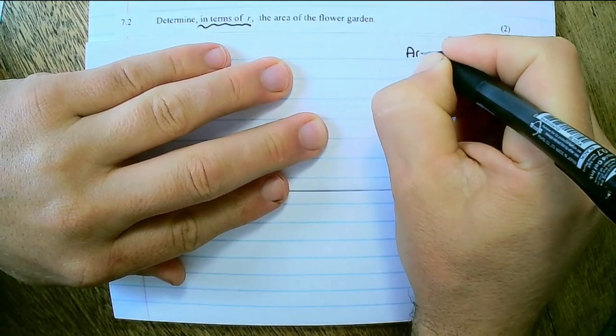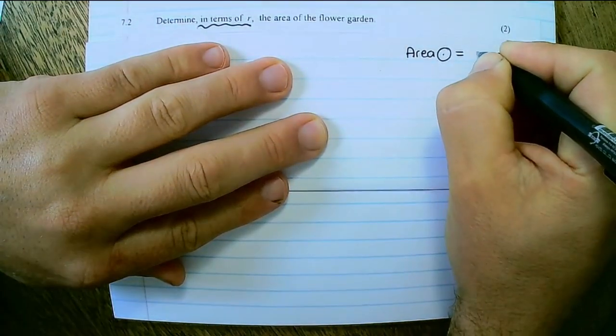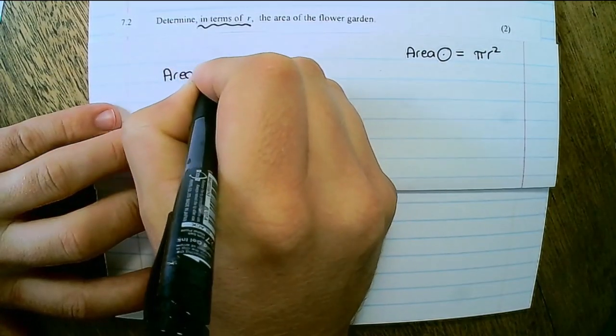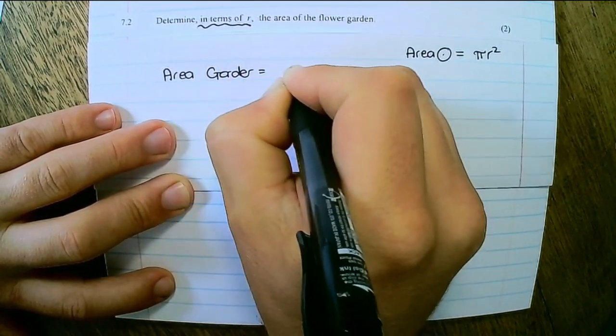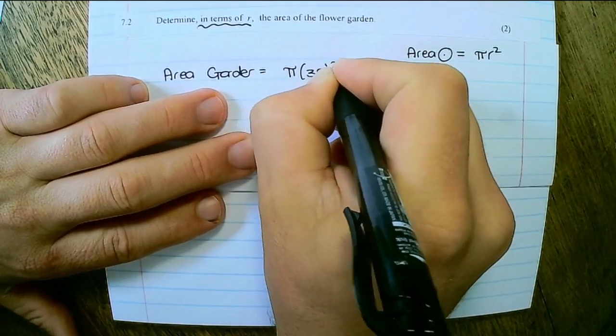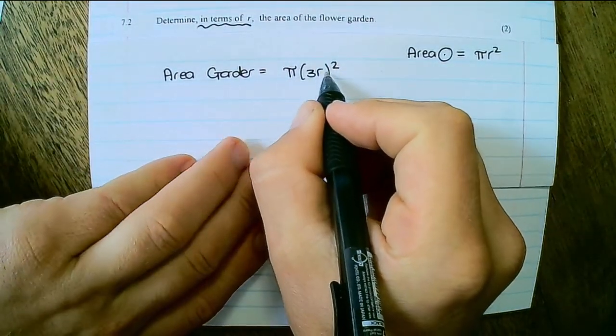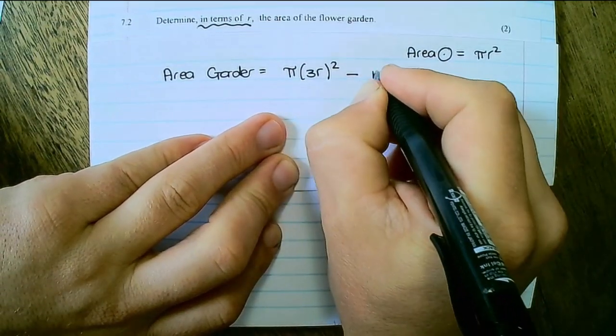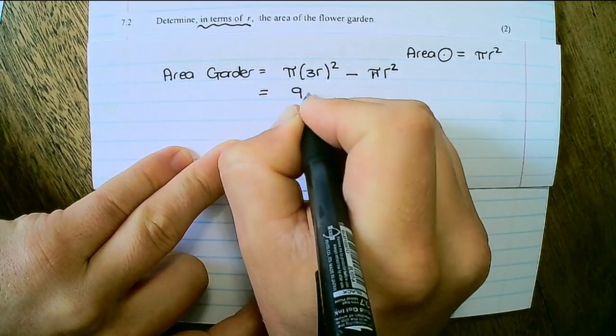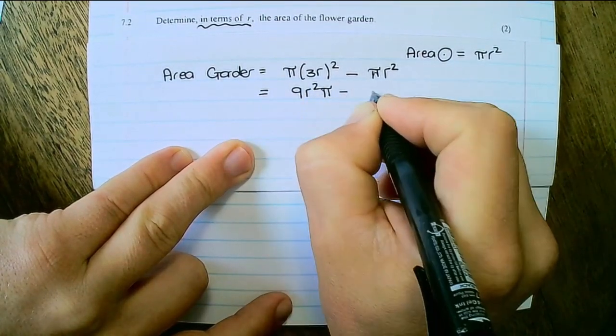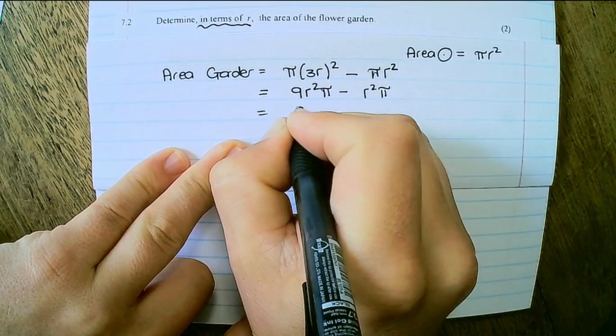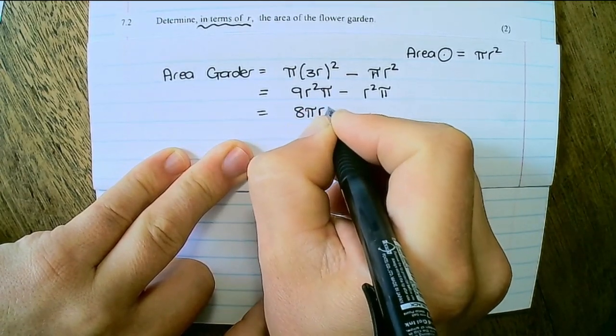So the area of a circle is equal to pi radius squared. Therefore, the area of the flower garden is the area of the bigger circle, which is pi times 3R squared, because the radius of the bigger circle is 3R. And I subtract the area of the smaller circle. And if I simplify, that will be 9R squared pi minus R squared pi. So the area of the garden would be 8 pi R squared.